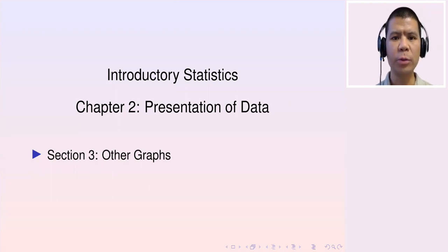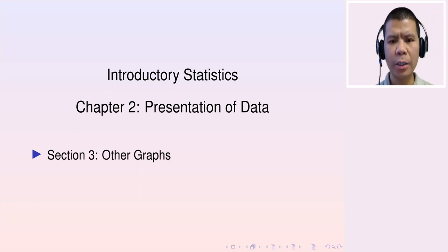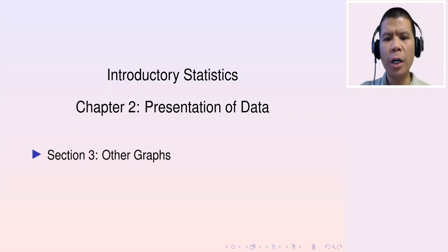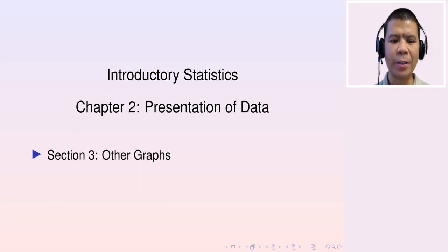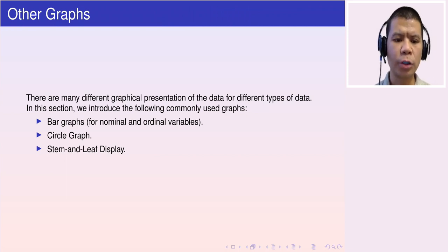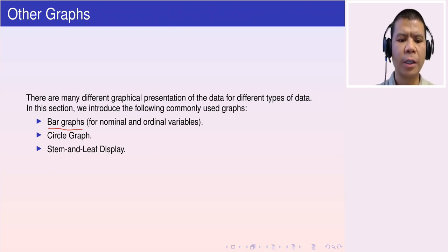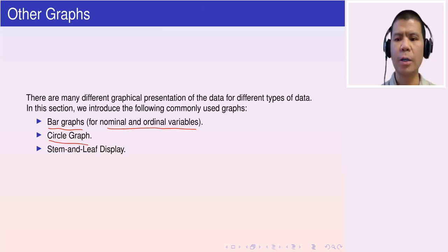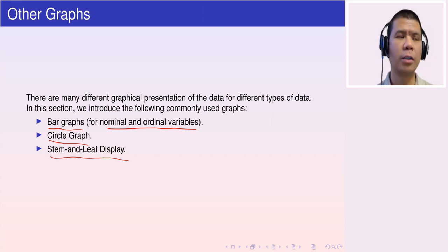Hello everyone. Welcome to lecture four on introductory statistics. In the last lecture, we talked about histograms and the frequency polygon. Now in today's lecture, we're going to introduce some other graphs. Let's consider section three on some other graphs. In this section, we're going to mainly focus on three types of graphs.